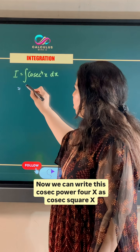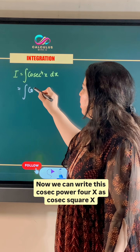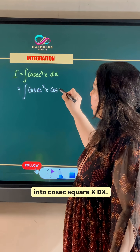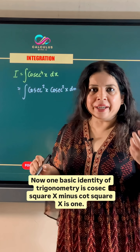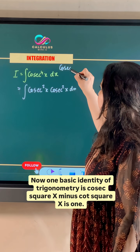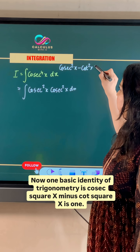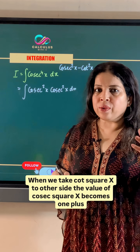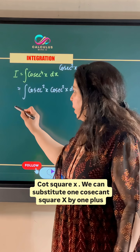We can write cosecant power 4x as cosecant square x into cosecant square x dx. One basic identity of trigonometry is cosecant square x minus cot square x equals 1. When we take cot square x to the other side, the value of cosecant square x becomes 1 plus cot square x.